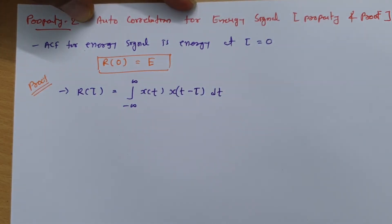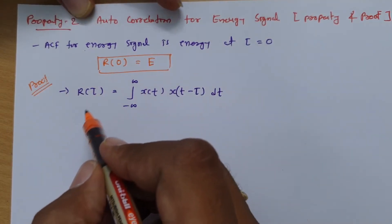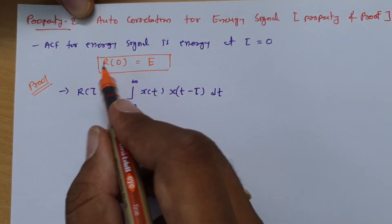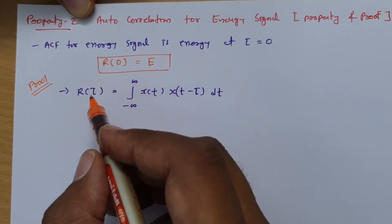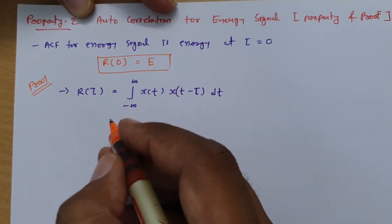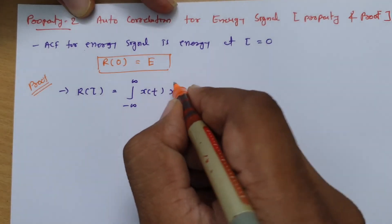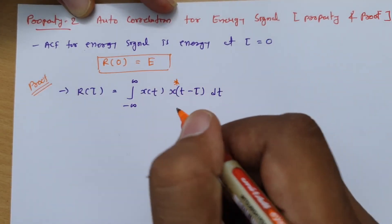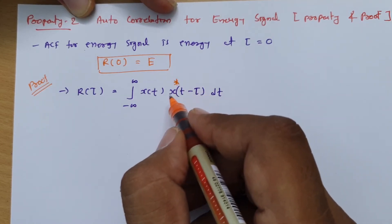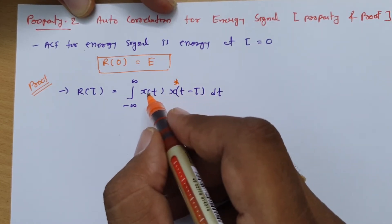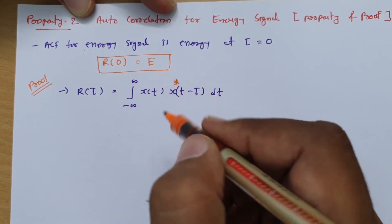Now here what we are dealing with is to calculate r(0) — the autocorrelation function at tau equals 0. If this is a complex signal, in that case we need to consider the complex conjugate star here. So for a complex signal it will have star, and for a real signal it will be only x(t) into x(t minus τ). For both cases we can prove this property.